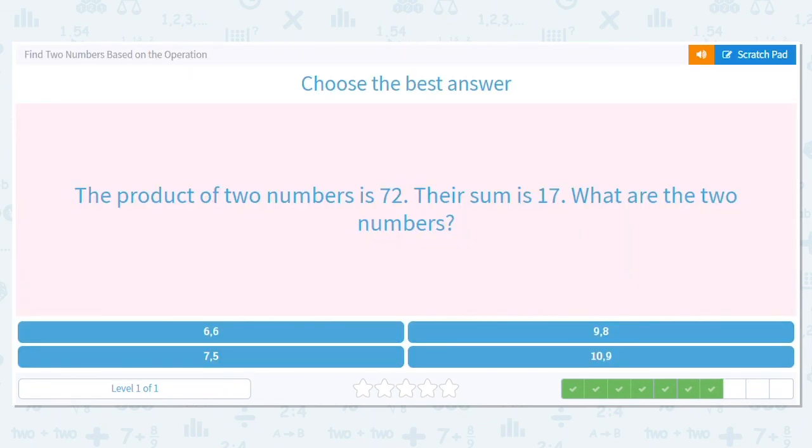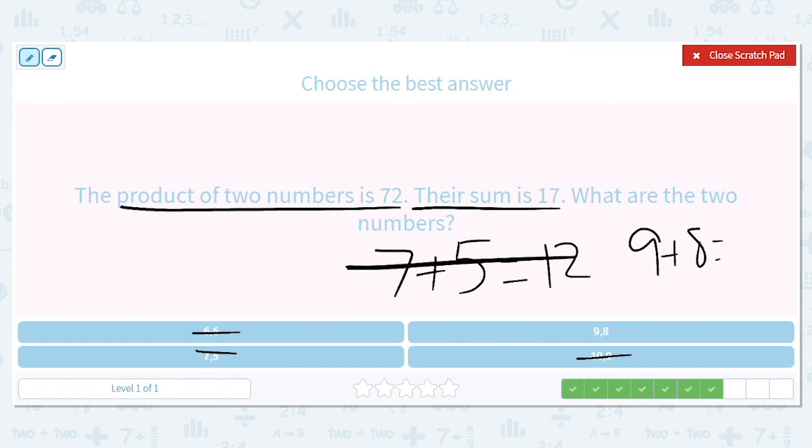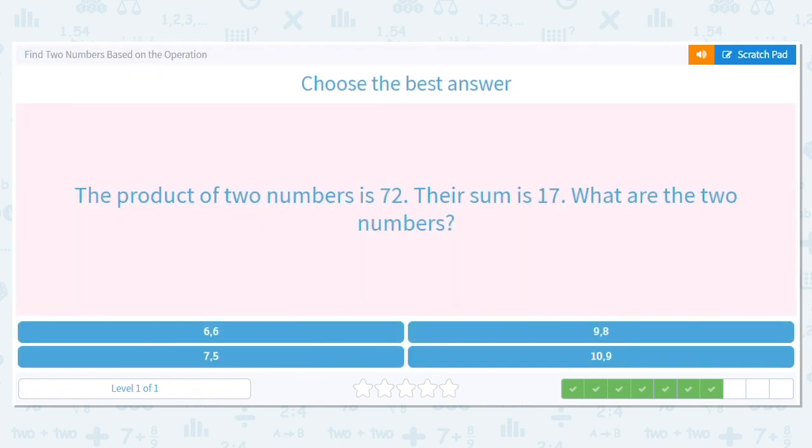The product of two numbers is 72. Their sum is 17. What are the two numbers? Again, we've got our multiple choice, which is awesome, because we can eliminate choices. So I can get rid of which ones? I can get rid of 10 and 9, because 10 and 9 multiplied equals 90. I want it to be 72. The next one I can get rid of is 6 and 6, because 6 times 6 equals 36. So that means it's either 7 and 5 or 9 and 8. Well, 7 plus 5 equals 12, so it can't be that. And 9 plus 8 equals 17. So that means 9 and 8 is my answer.